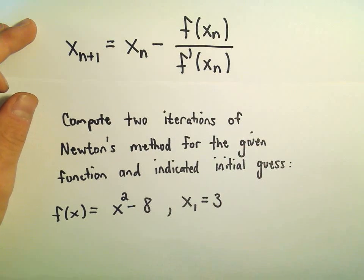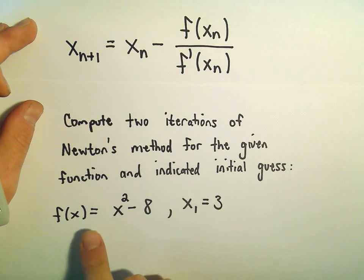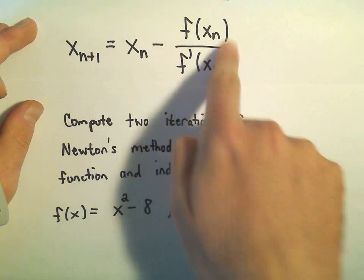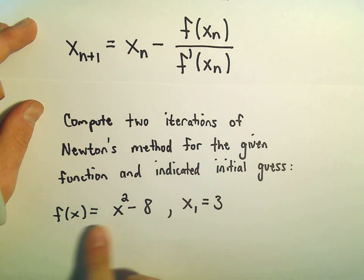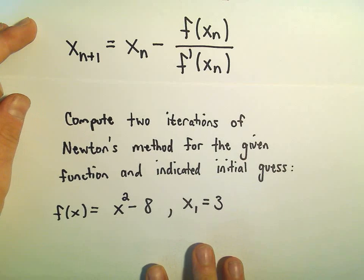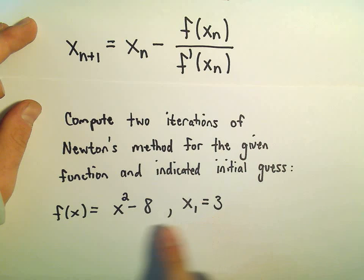Okay, so the idea is we're going to just do two iterations of Newton's method, so we're going to kind of run through this twice. So notice with the function f of x equals x squared minus 8, if you plug in the number 3,